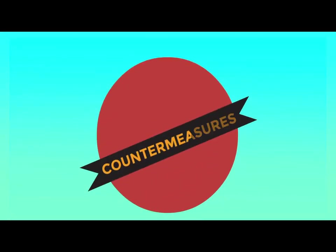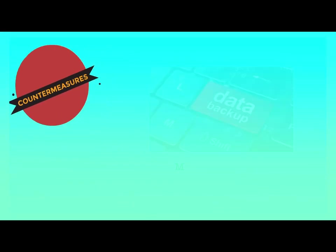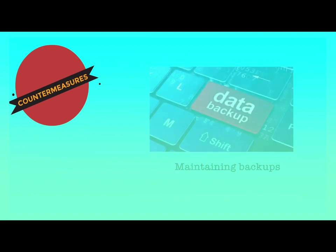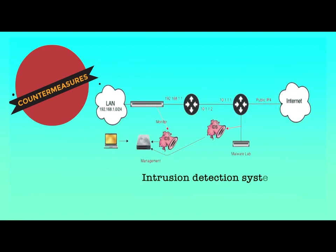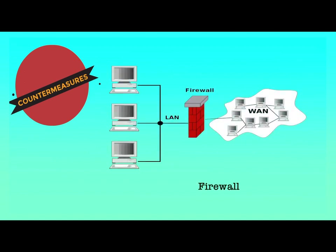The countermeasures to address these threat sources are maintaining backups to replace failed systems, using an intrusion detection system to monitor network traffic and host system activities, and employing certain firewall and router configurations.